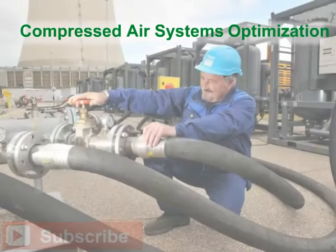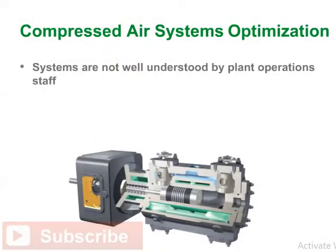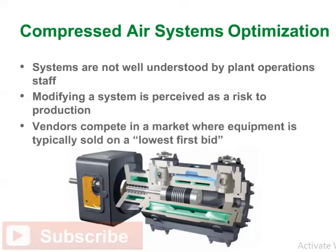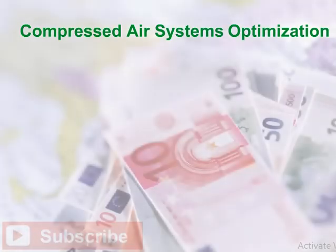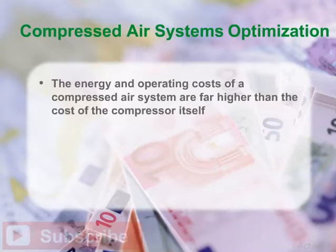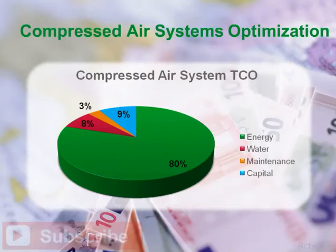The efficiency of compressed air systems typically receives little attention for a number of reasons. Systems are not well understood by plant operations staff. Modifying a system is perceived as a risk to production. Vendors compete in a market where equipment is typically sold on a lowest first bid without regard for the cost of operation. The energy and operating costs of a compressed air system are far higher than the cost of the compressor itself. Over the lifetime of a compressed air system, approximately 80% of the total cost of ownership is electricity.